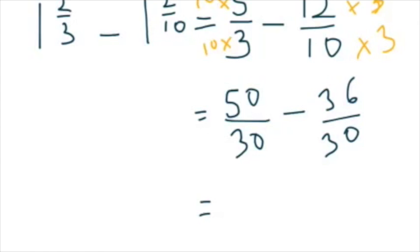And that is going to give us 50 thirtieths minus 36 thirtieths. 50 minus 36 is 14. And we do not subtract the denominators, the bottom numbers. So we now have a situation where we could simplify, and we always should simplify the fraction. So let's divide by 2. 14 divided by 2 is 7. 30 divided by 2 is 15.